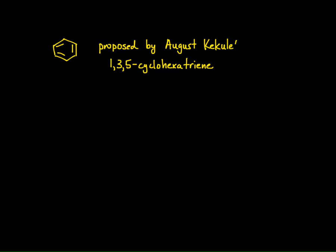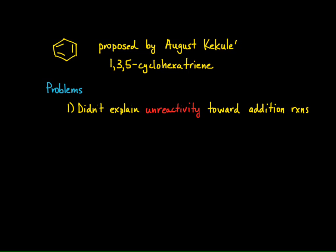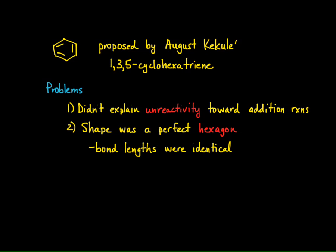There were quite a few problems with this structure in terms of its reactivity. As we've already discussed, benzene is non-reactive toward electrophilic addition reactions, unlike your typical alkene. The other issue is that the shape of benzene was determined to be a perfect hexagon. Why is that a problem? Because the bond lengths were found to be identical.